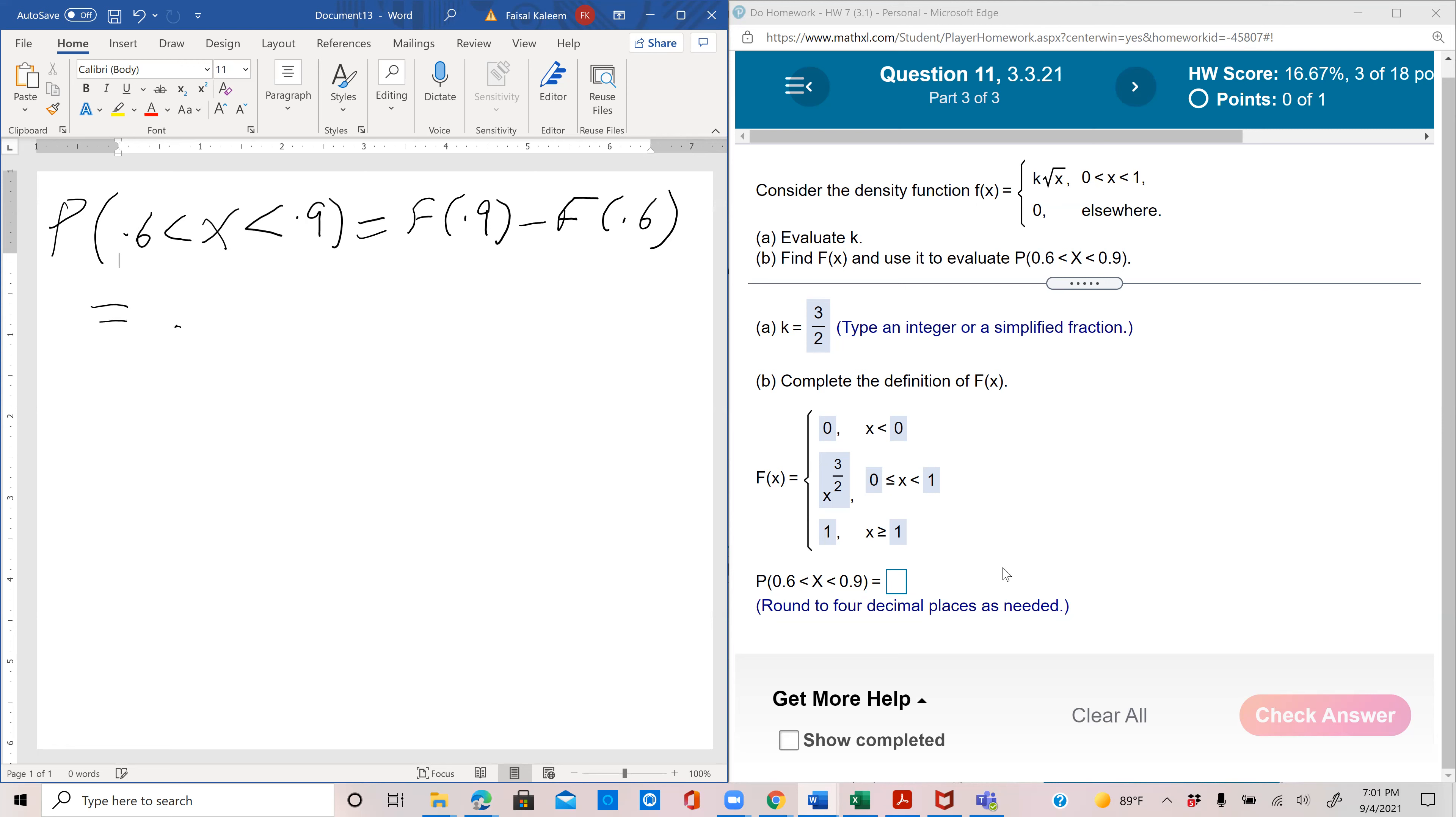So big F at 0.9 would be 0.9 power 3 halves. At 0.6, it would be 0.6 power 3 halves, because both 0.9 and 0.6 fall in the 0 to 1 interval. Therefore, we'll be using this definition to find both of them. And let's see what this simplifies to, 0.9 power 1.5 minus 0.6 power 1.5. So we get 0.3891.